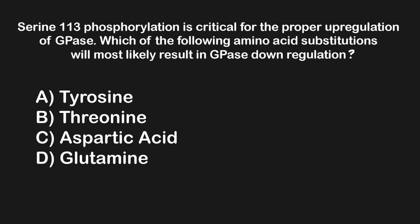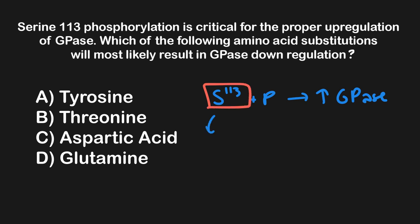The last question asks: serine-113 phosphorylation is critical for the proper upregulation of GPAs — which amino acid substitution will most likely result in GPAs downregulation? The question tells us that phosphorylating serine-113 upregulates GPAs, so we want a substitution that eliminates that function. This means we don't want Y, S, or T, and we don't want D or E (aspartic acid or glutamic acid), since those are phosphomimetic. Any other substitution should result in downregulation.